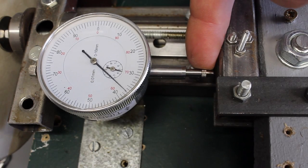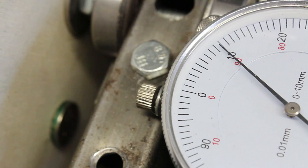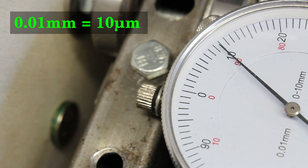The linear movement is measured with a dial indicator. One scale mark equals a movement of 0.01mm, thus 10 micrometers.